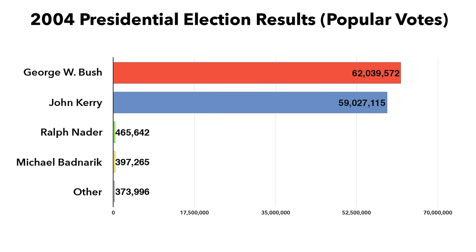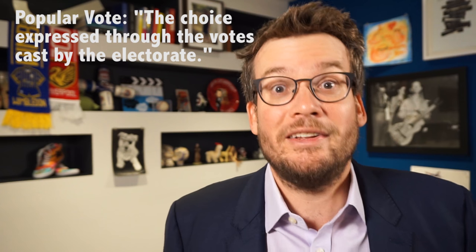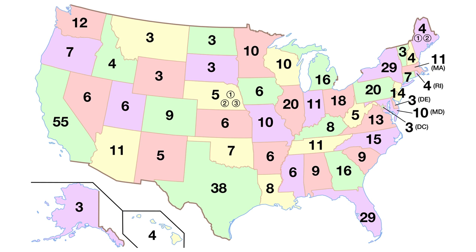Across the country, Bush received about 3 million more votes that year than Kerry did, but of course the popular vote doesn't matter in US presidential elections because of the Electoral College. This is a strange and anachronistic feature of our presidential elections explained in detail by CGP Grey, but quick overview: every state is allotted a certain number of electoral votes based on congressional representation. Every state has two senators, so they get two electoral votes, and from there it's decided by population — California has 55 electoral votes whereas Montana has 3.